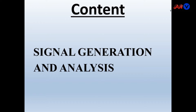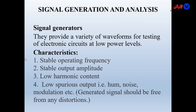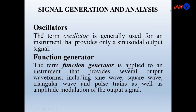Welcome to PRV Solution. Today we will study signal generation and analysis, specifically sine wave generators, also known as oscillators. Signal generators provide a variety of waveforms for testing electronic circuits at low power levels. They are used in the laboratory and must possess characteristics such as stable operating frequency, stable output amplitude, low harmonic content, and low spurious output — meaning the generated signal should be free from any distortions.